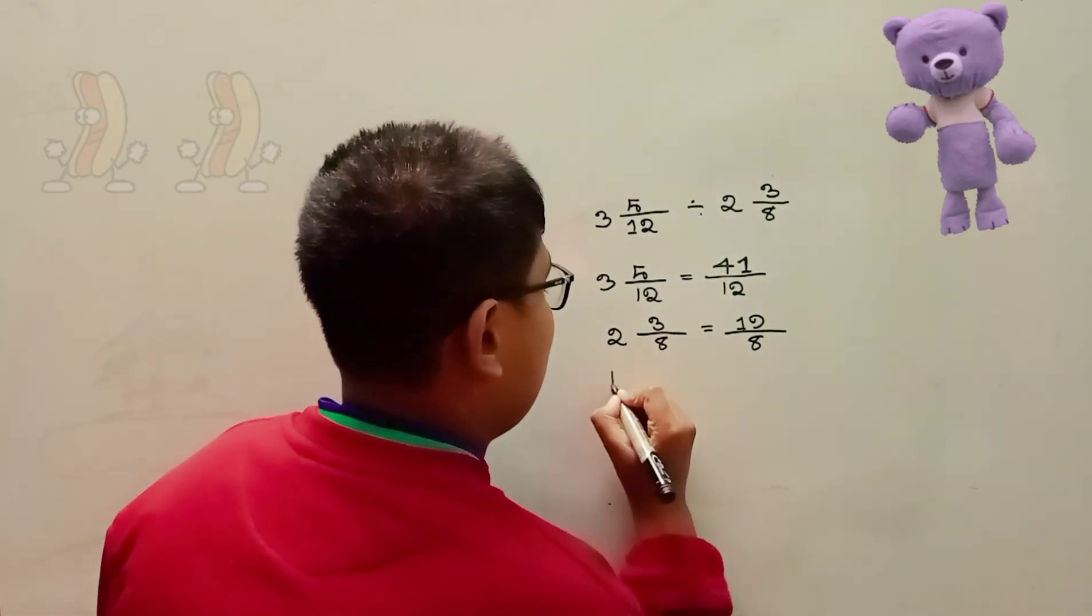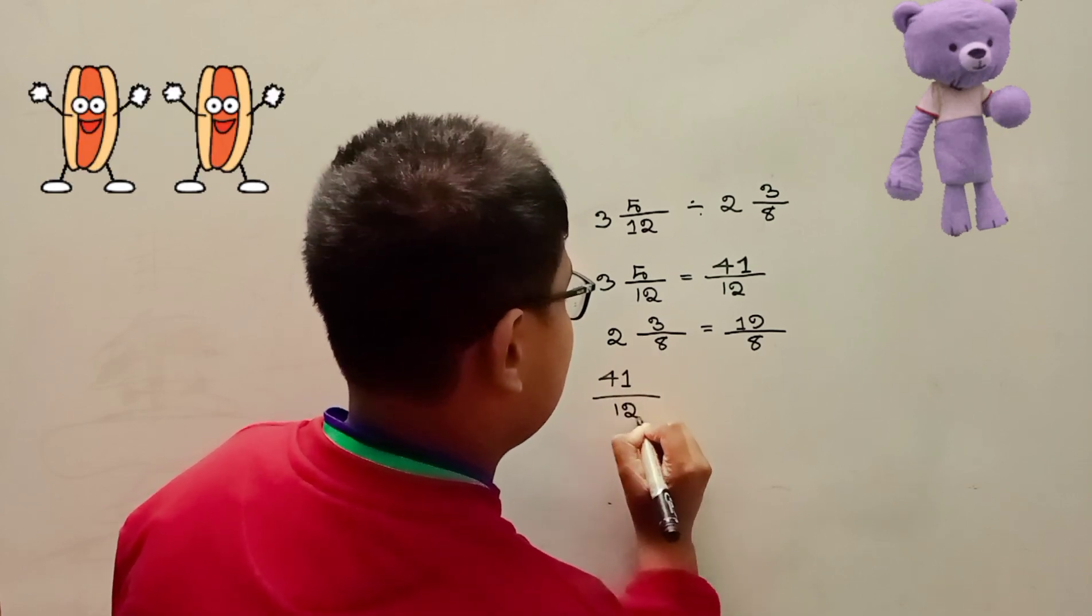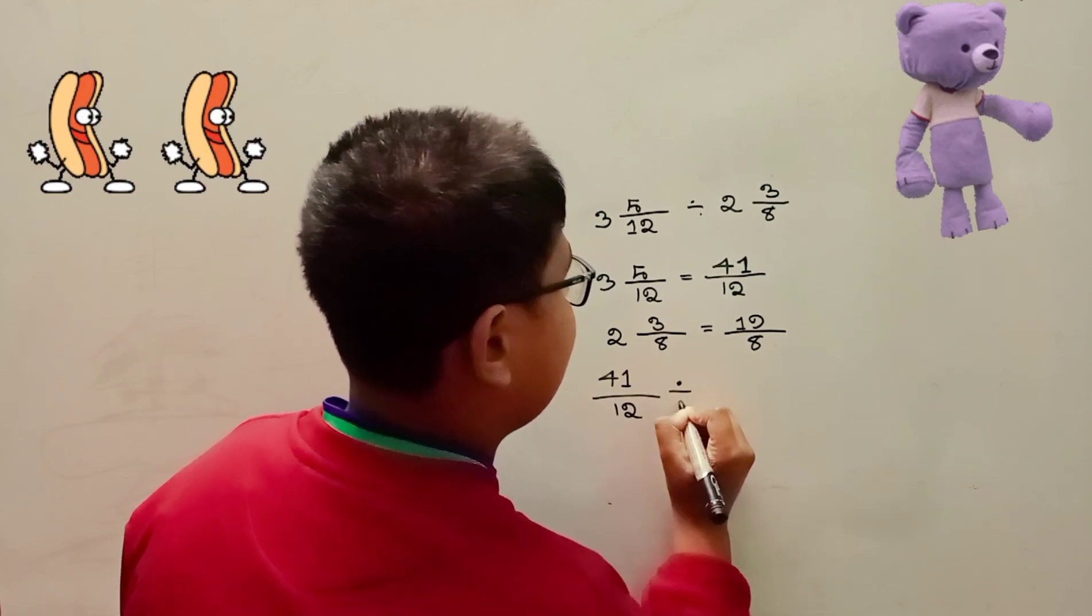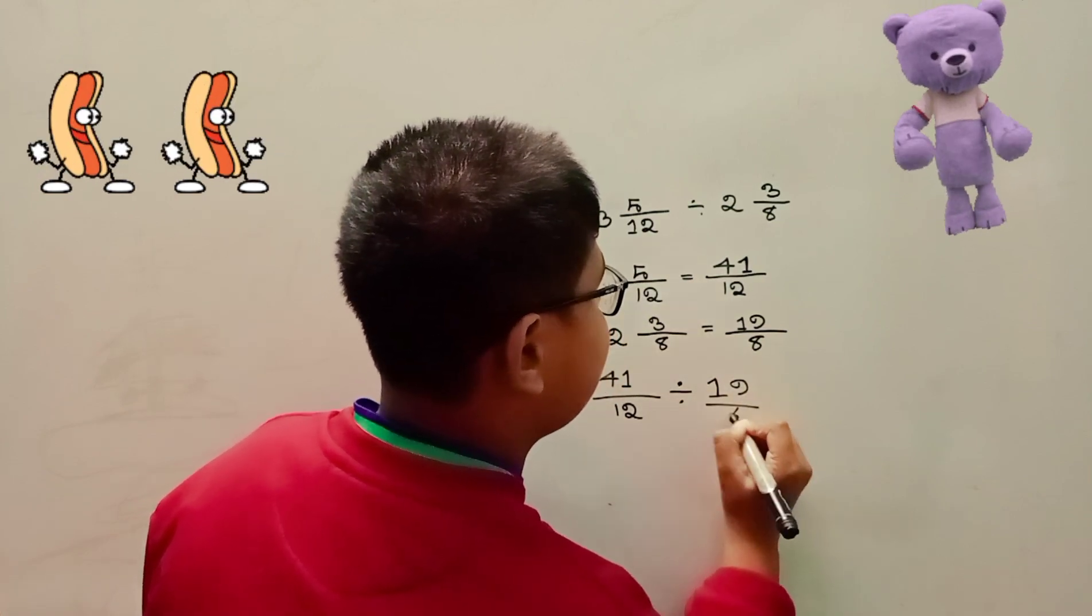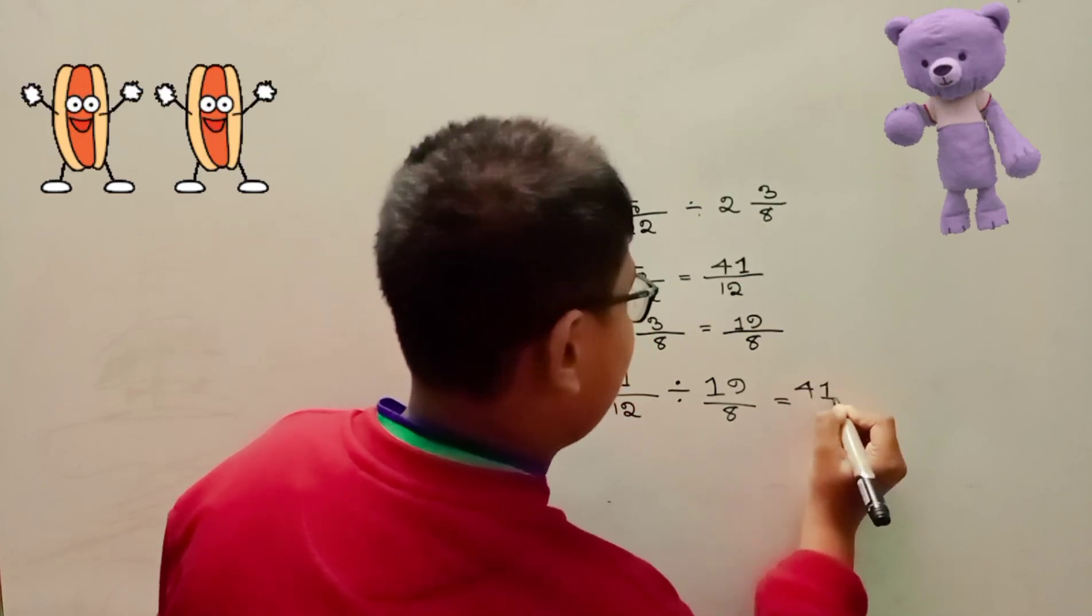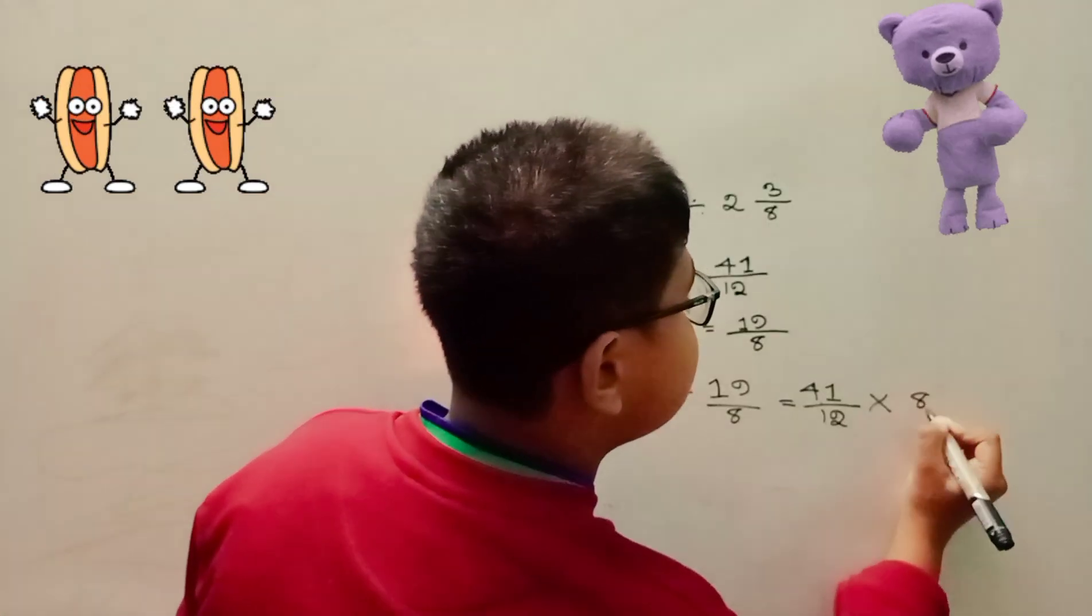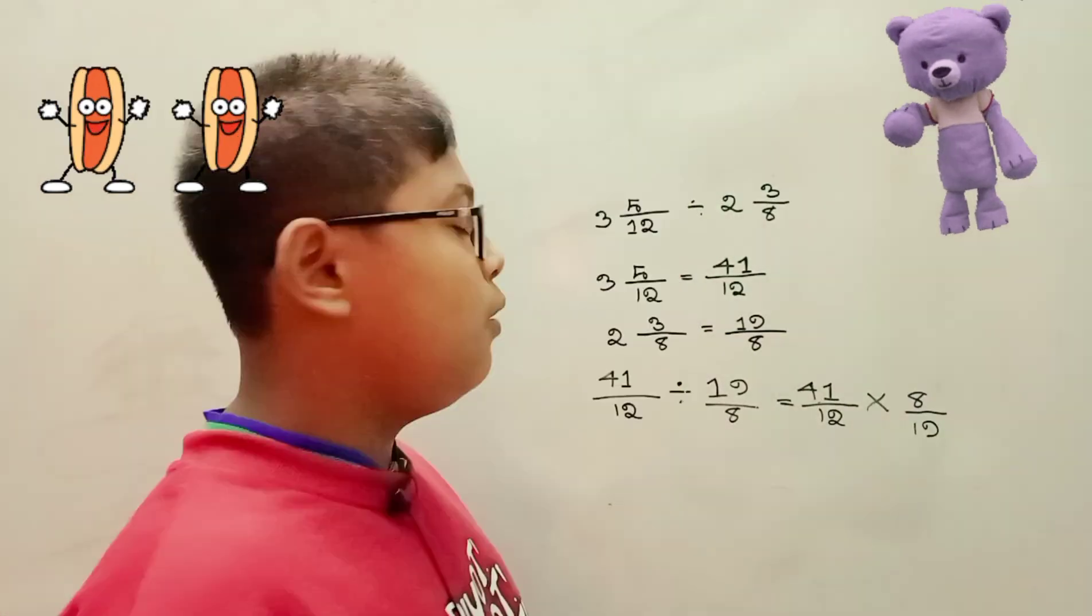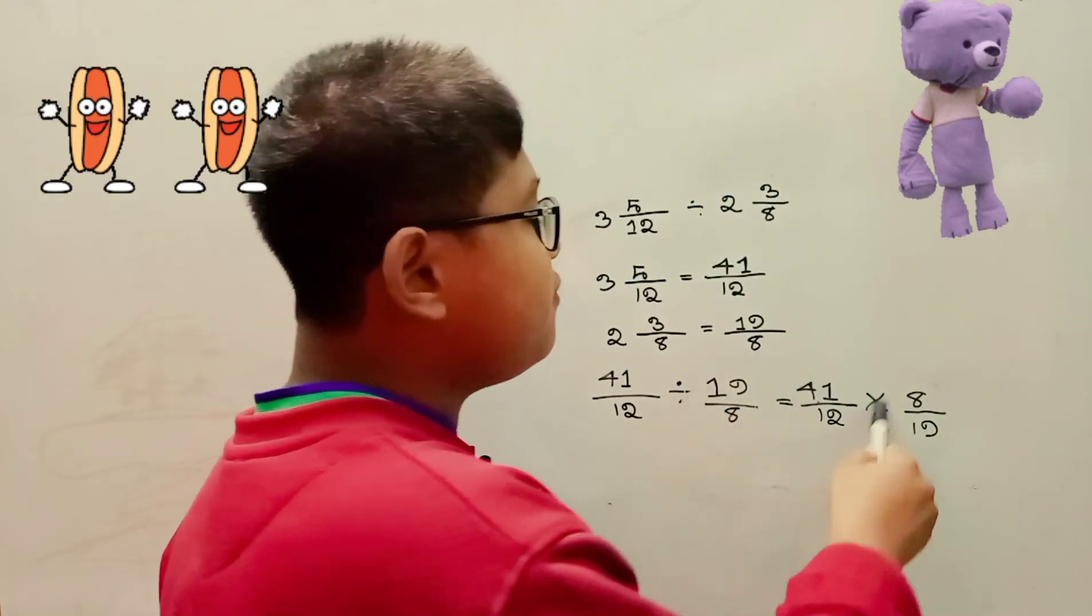Now 41 over 12 divided by 19 over 8 equals 41 over 12 times 8 over 19. We flipped or inverted the divisor to its reciprocal.